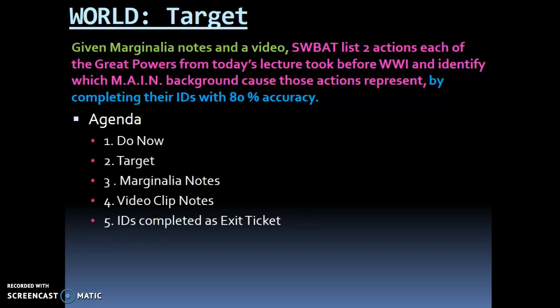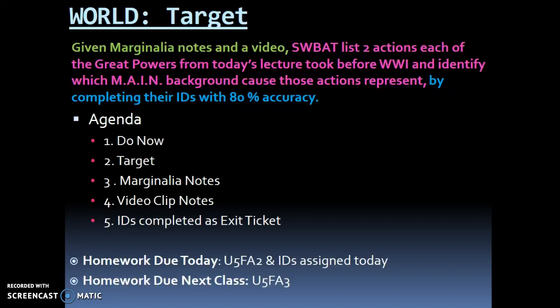If we take a look at our agenda, we've just completed the do now, which was breaking down our objective. We're currently going over the target, and in just a moment we'll be jumping into marginalia notes. There is a video clip we'll be watching if time allows. We'll be giving you about 15 to 20 minutes to complete the IDs today. Your unit 5 formative assessment 2 is due today, and the IDs assigned today as the exit ticket are also due — two key items to submit at the end of class.